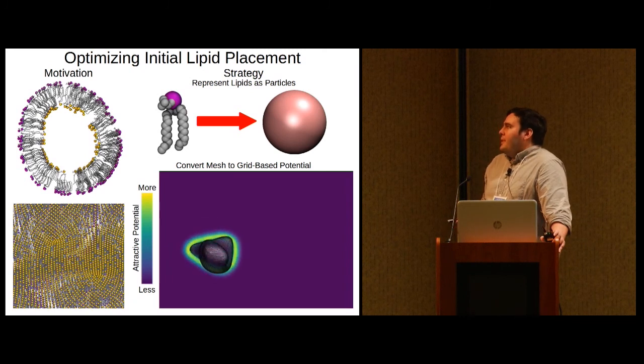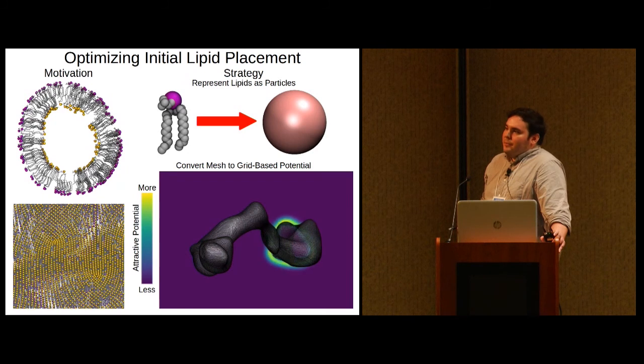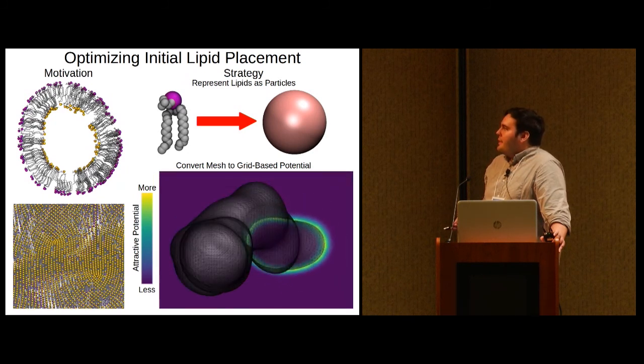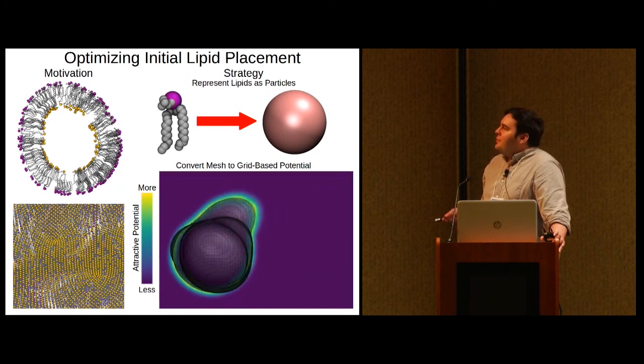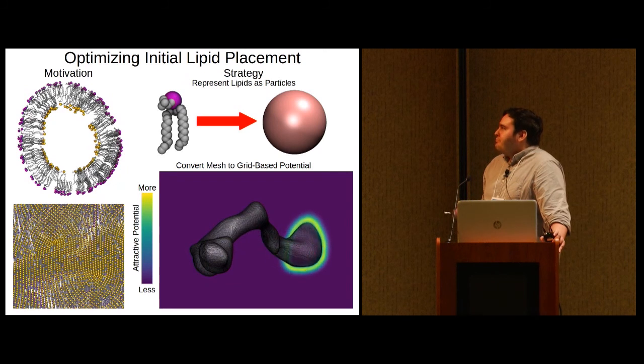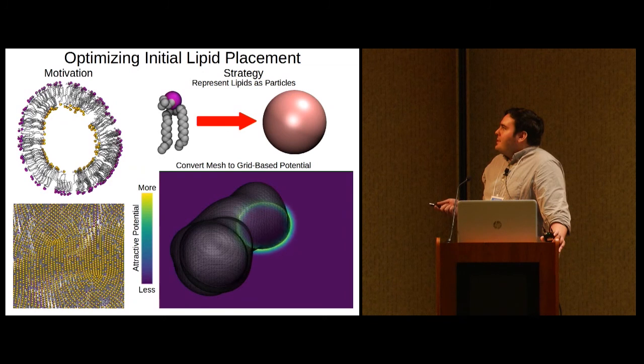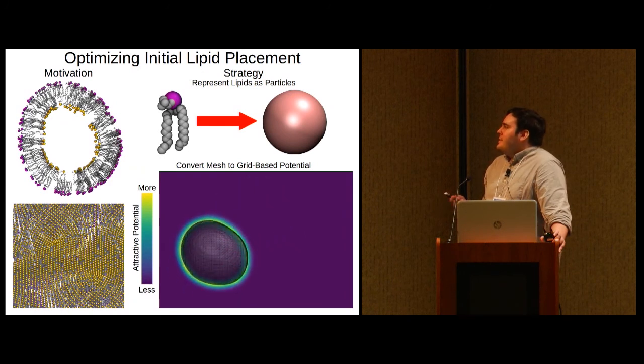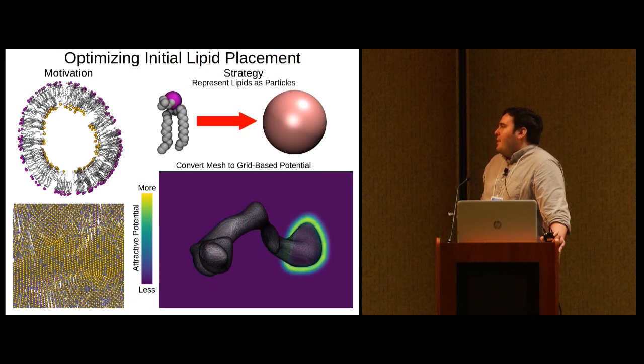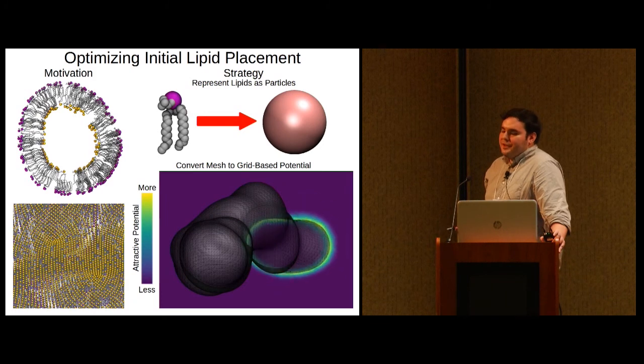In principle, you could equilibrate these modeling artifacts away once you've built your final model, but this is probably going to take a long time. If you can avoid it, it's certainly not something you want to be spending your precious supercomputing allocation on. So our strategy for dealing with this problem is to represent lipids as large Leonard-Jones particles and then simulate them while attracted to grid-based potentials representing the inner and outer leaflet meshes using the grid forces feature of NAMD.